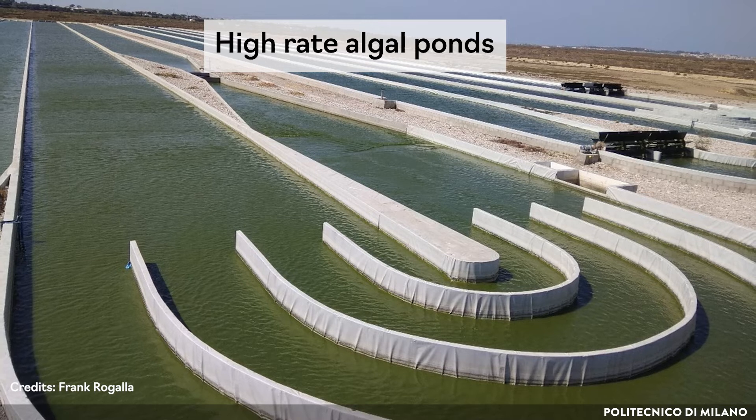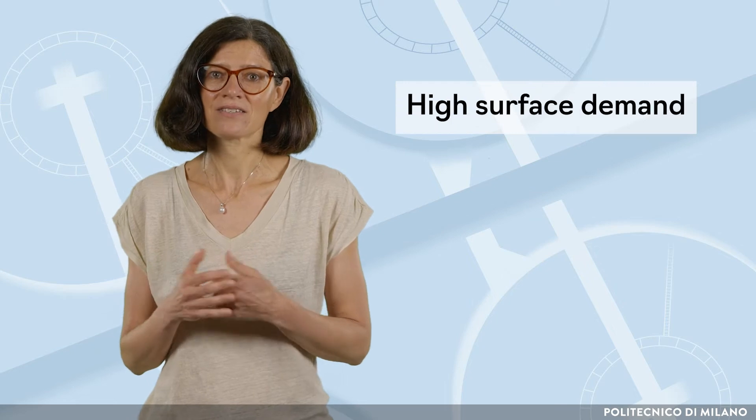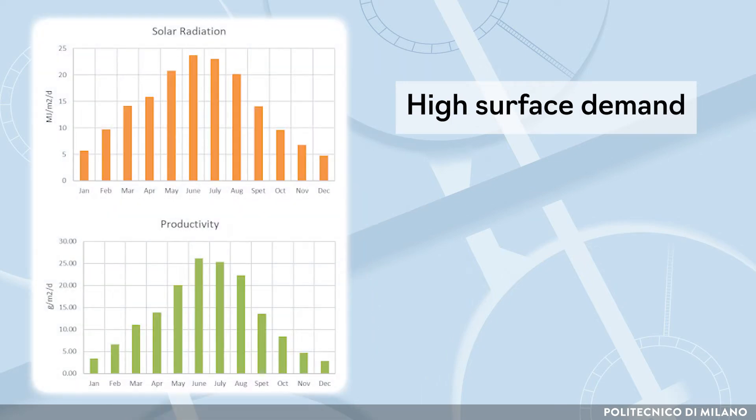They can be as simple as dug channels with plastic liners. Being based on the capture of solar energy, these systems have a high surface demand, since microalgae productivity and consequent remediation capacity is proportional to the surface of the pond and the incident solar radiation, making it season- and climate-dependent. Thus, for a complete assessment of the applicability of the process, the constraints posed by weather and climatic conditions and the significant footprint must be considered.